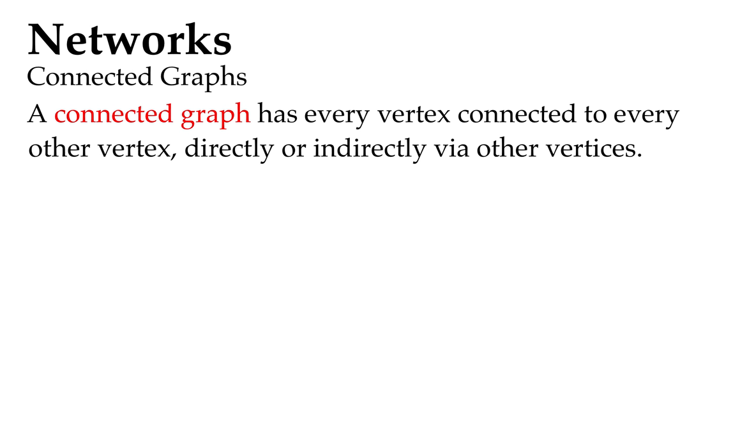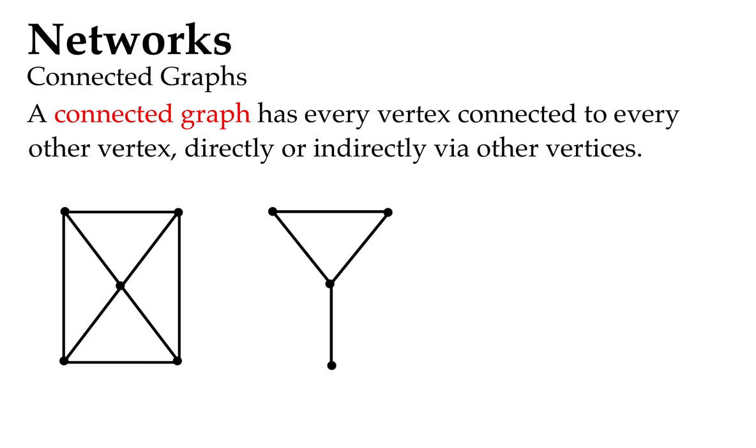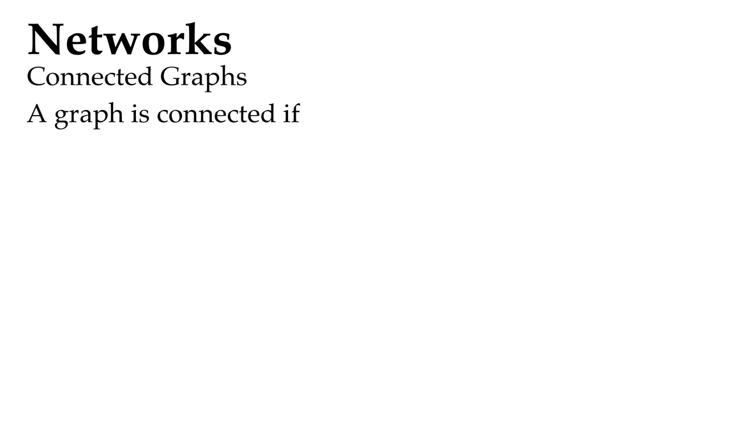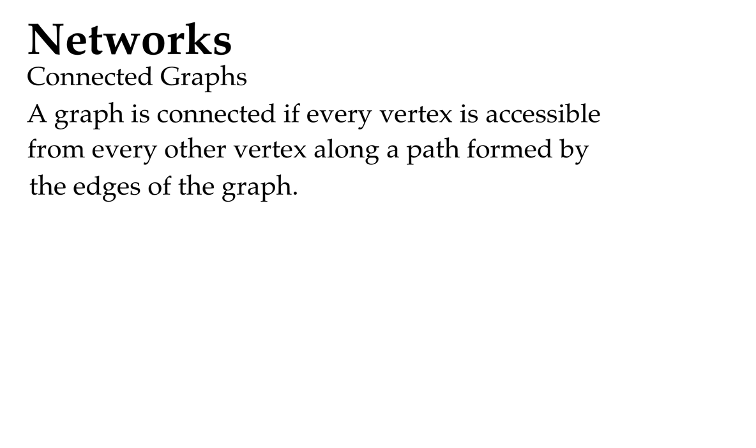Connected graphs is where every vertex is connected to every other vertex, either straight away via an edge or indirectly via other vertices. So you can visit anyone you like on those connected graphs. A graph is connected if every vertex is accessible from every other vertex.